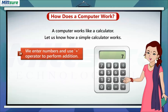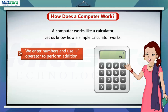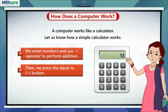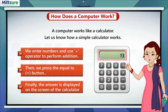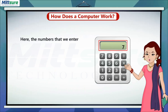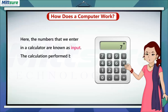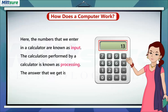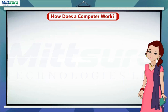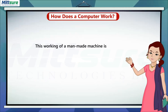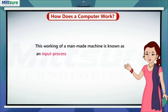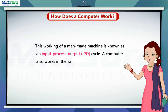We enter numbers and use the plus operator to perform addition. Then we press the equal to button, and the answer is displayed on the screen of the calculator. The numbers we enter in a calculator are known as input. The calculation performed is known as processing. The answer we get is known as output. This working of a man-made machine is known as the input-process-output, or IPO, cycle. A computer also works in the same way.